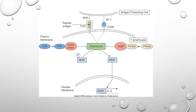Normally what happens is we have an antigen-presenting cell, such as a macrophage or dendritic cell, which presents an antigen through an MHC marker and binds onto a T-cell receptor and also a CD28 receptor, leading to activation of calcineurin — a serine-threonine phosphatase that dephosphorylates NFAT, allowing it to translocate into the nucleus and lead to transcription of genes that produce IL-2. IL-2 is a very important cytokine that leads to clonal expansion of T-cells.